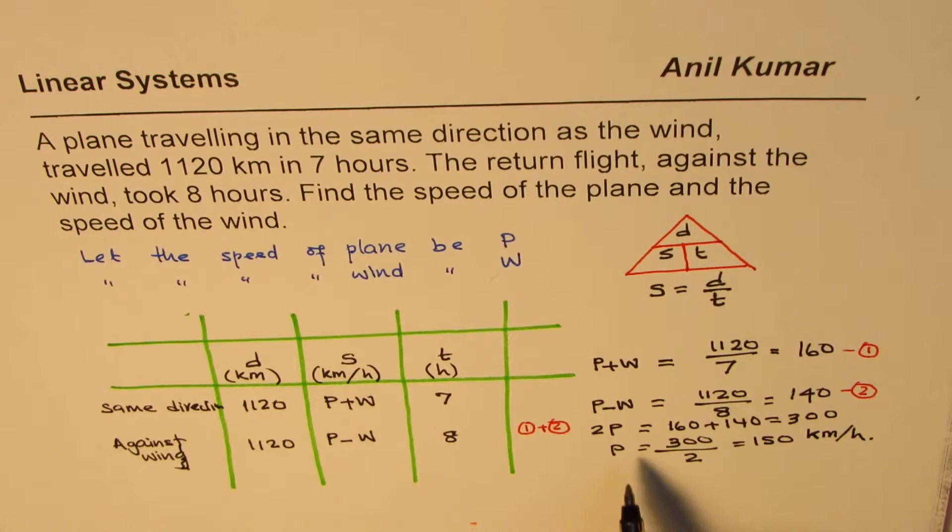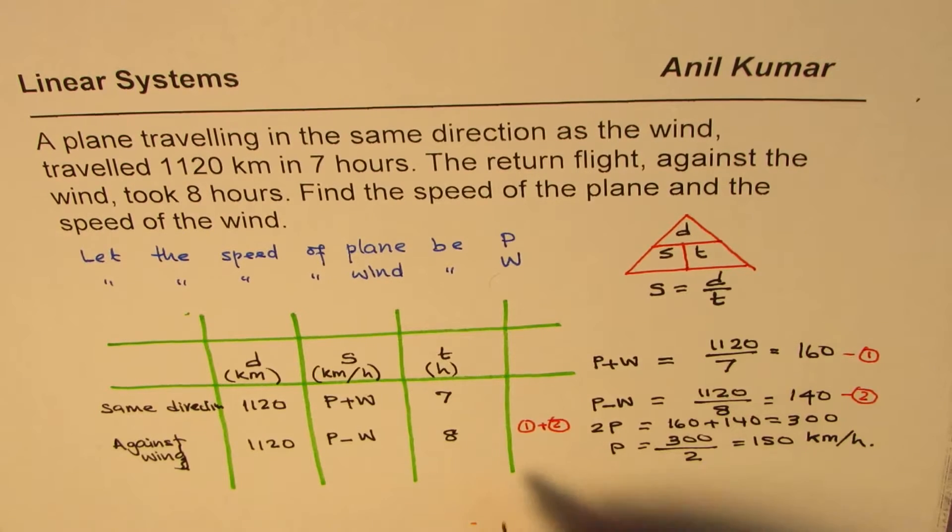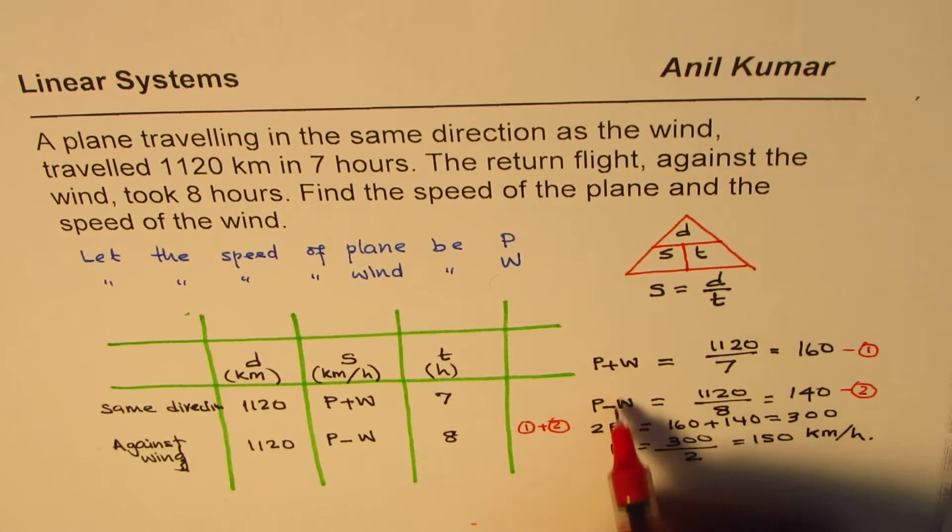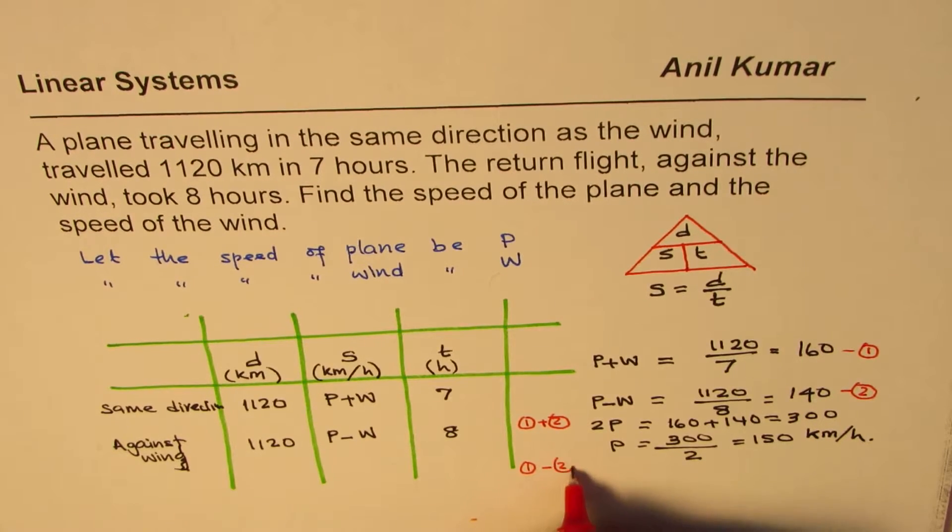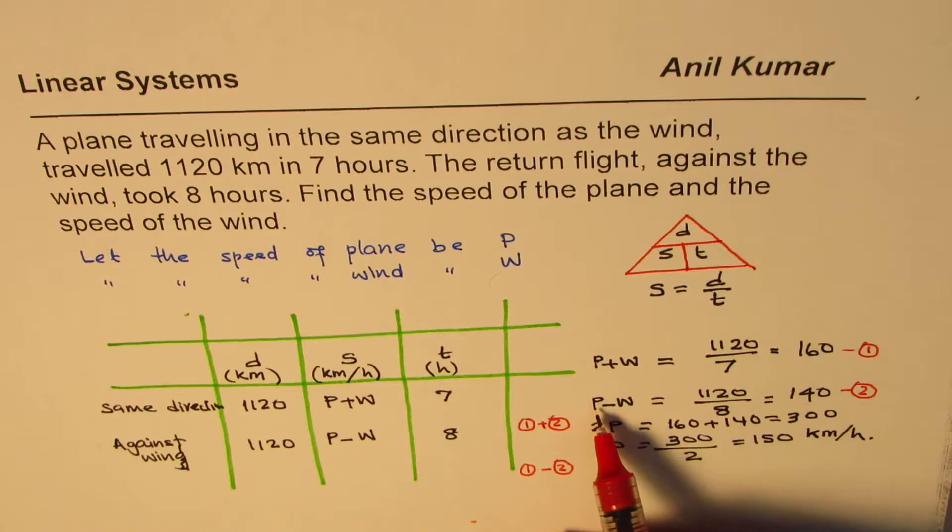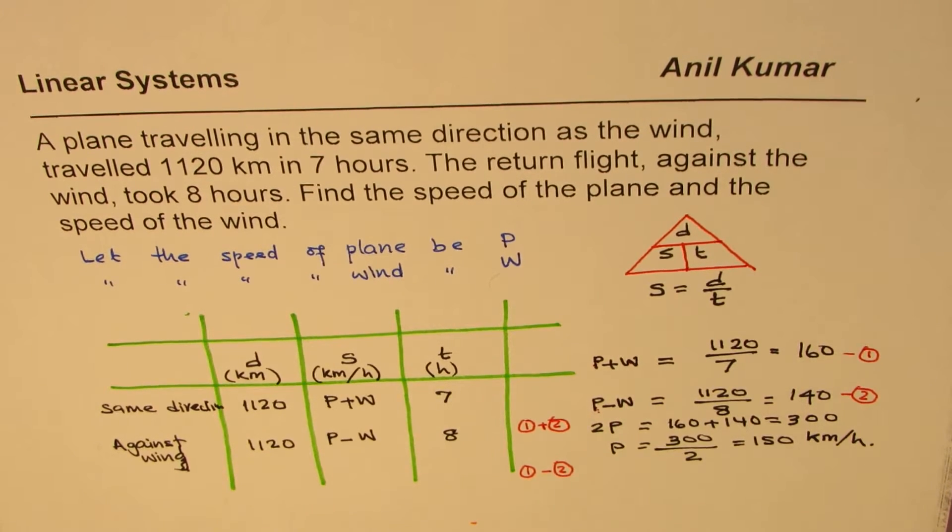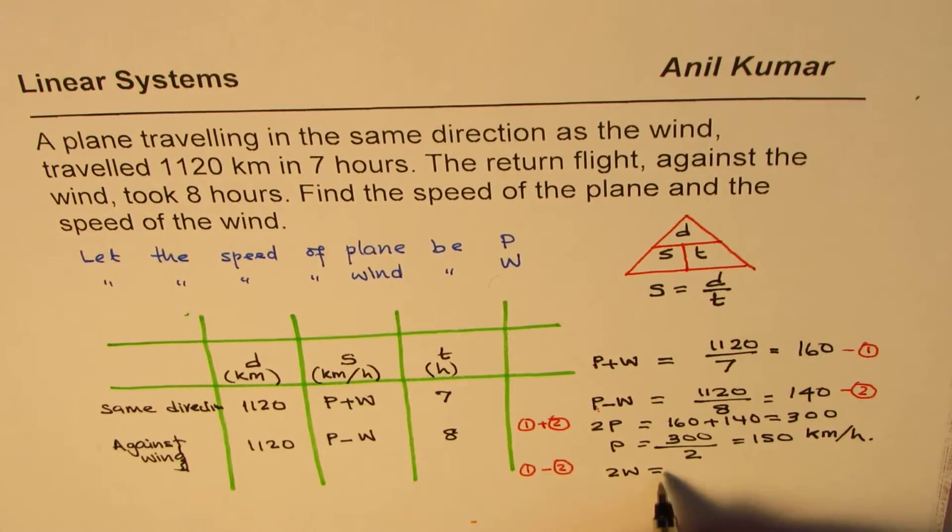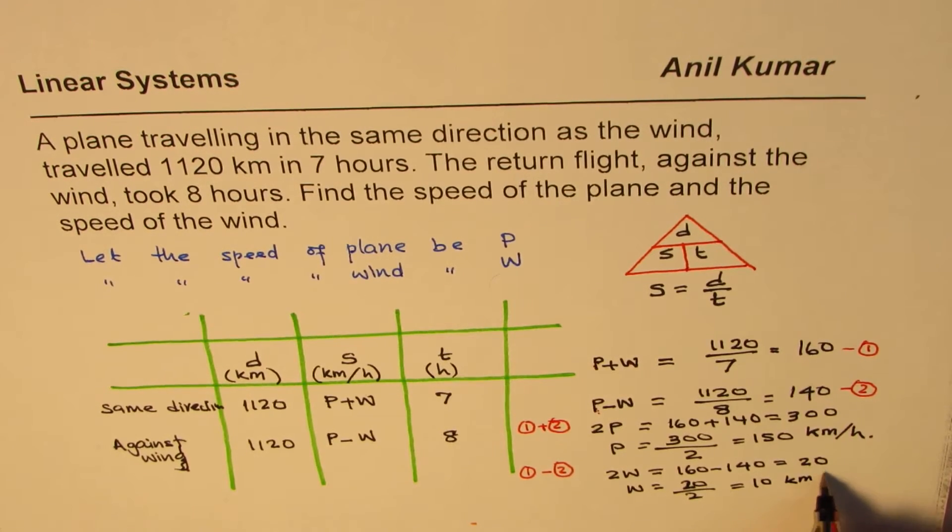Once you get one speed, you can always substitute the value and get the other one. But in this case, it is actually simpler to subtract one from the other and find W also. So what we'll do is equation 1 minus equation 2. Plane speeds cancel out, we get 2W. So in that case, we get twice the wind speed is equals to 160 minus 140, which is 20. So wind speed is 20 divided by 2 or 10 kilometers per hour.